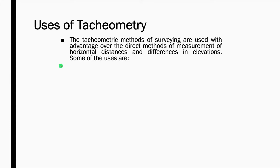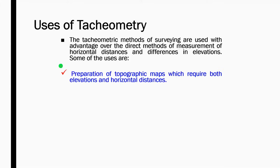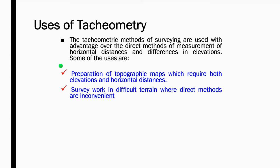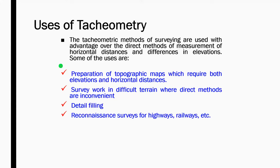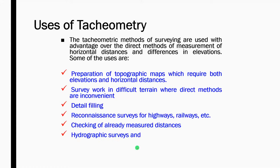So what are the uses of tachymetry? The tachymetry methods of surveying are used with advantage over direct methods of measuring horizontal distances and differences in elevation. The uses include: preparation of topographic maps requiring both elevations and horizontal distances; survey work in difficult terrain where direct methods are inconvenient; detail filling; reconnaissance surveys for highways, railways, etc.; checking of already measured distances; hydrographic surveys; and establishing secondary control.